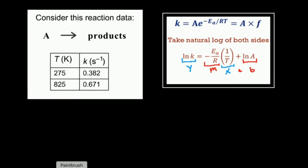If I go back and look at what I want to plot, I'm going to have to plot 1 over the temperature for my X and then my Y axis is going to be natural log of the rate constant. So I need to take the reciprocal of all these temperatures.